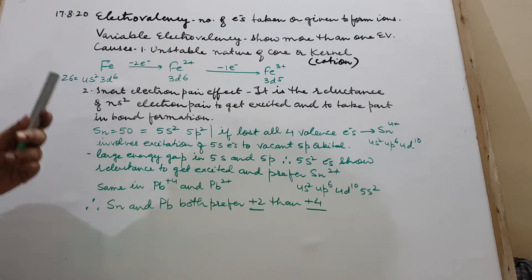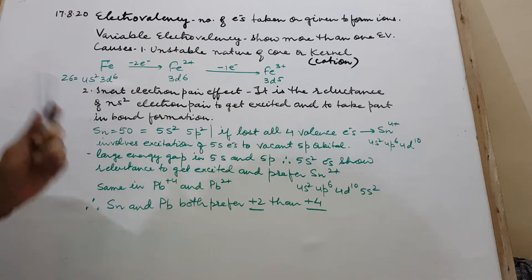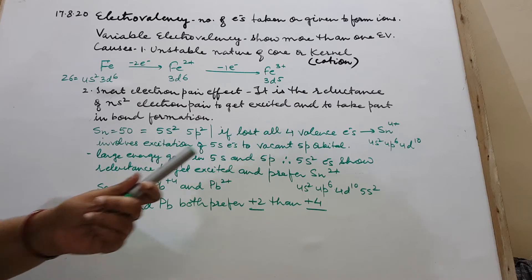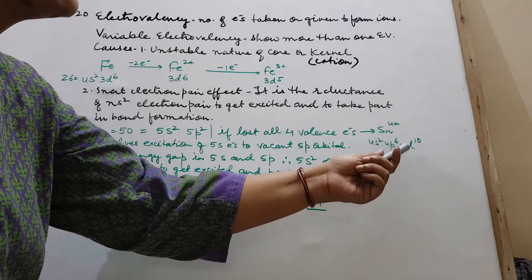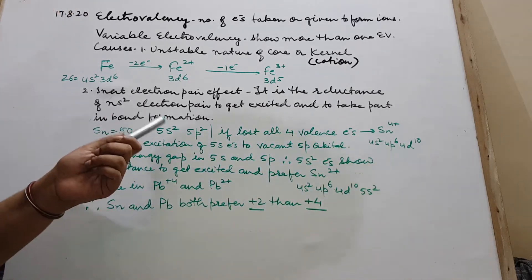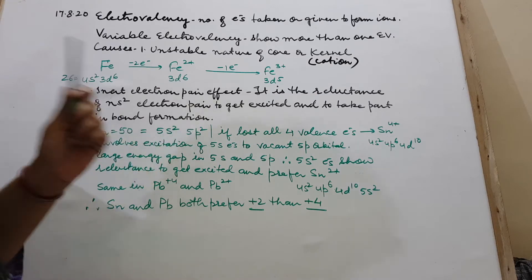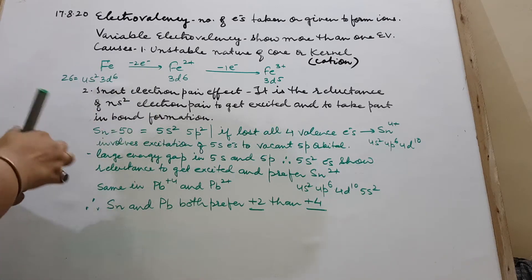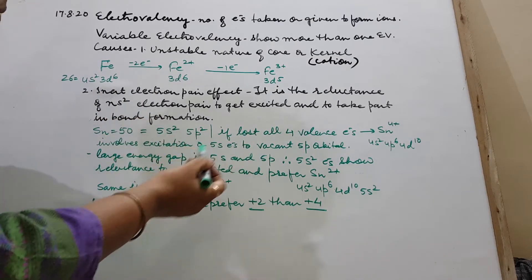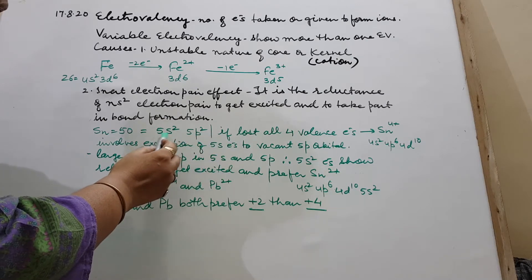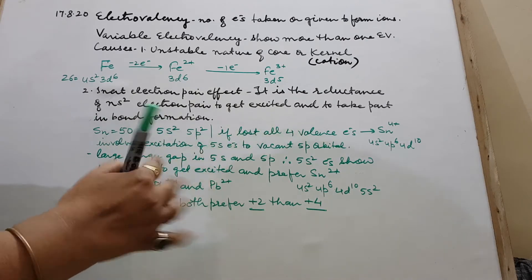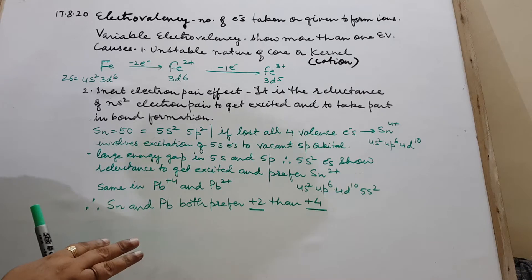Now tin is 50. So when you write the configuration, it comes as 4s2, 4p6, 4d10 and then 5s2, 5p2. I did not write the beginning part, I wrote just towards the end. The end part, the valence shell, 5s2, 5p2.